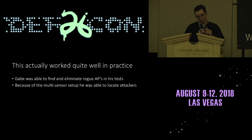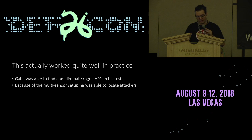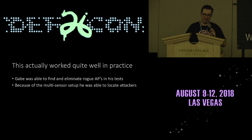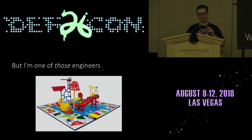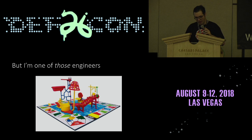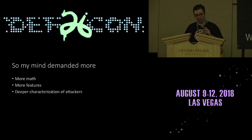This actually worked pretty well in practice. He was able to find and eliminate rogue APs in his tests, and using the multi-sensor setup he was able to physically locate the attackers. That said, when he first gave me the pitch I was like, really? Just the mean? I'm one of those engineers who's always trying to build a Rube Goldberg machine. I instantly thought to myself: that's not enough math. That cannot possibly be enough math. But I had to give my respect because it worked really well in practice.